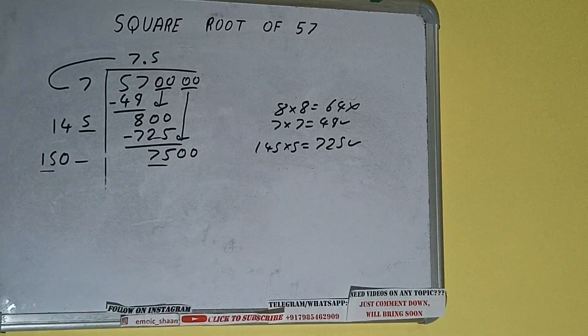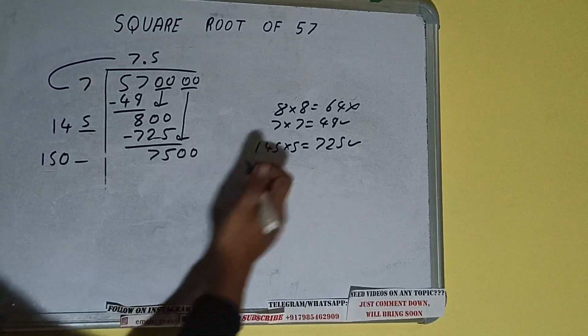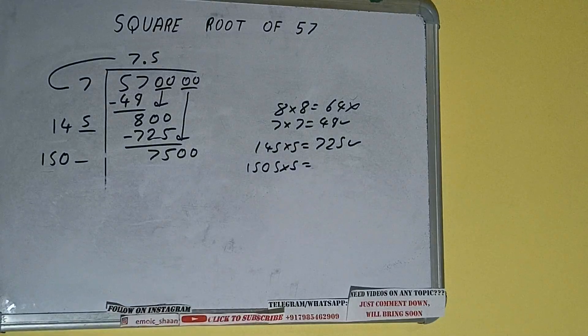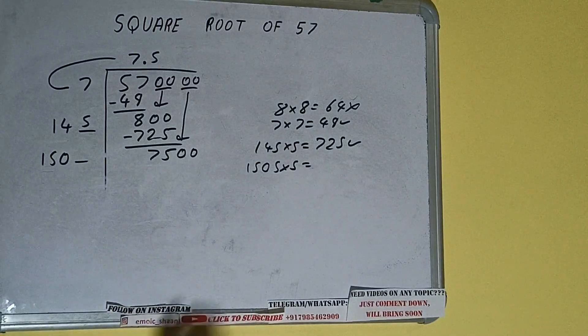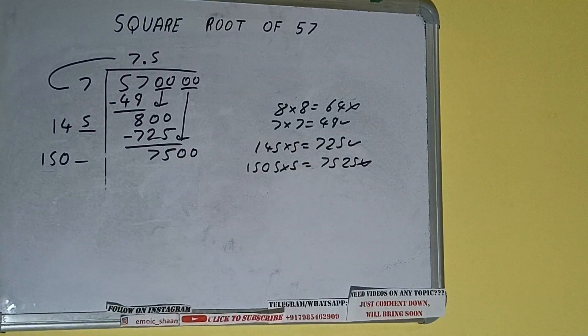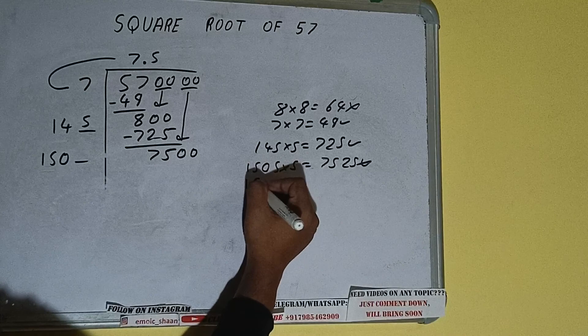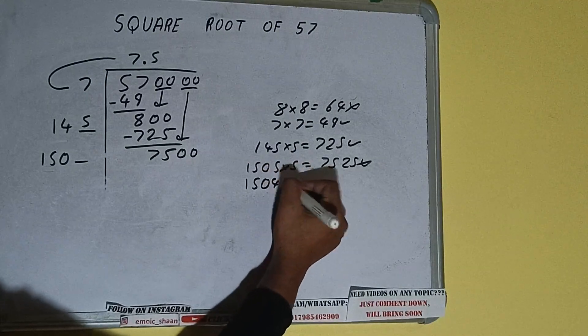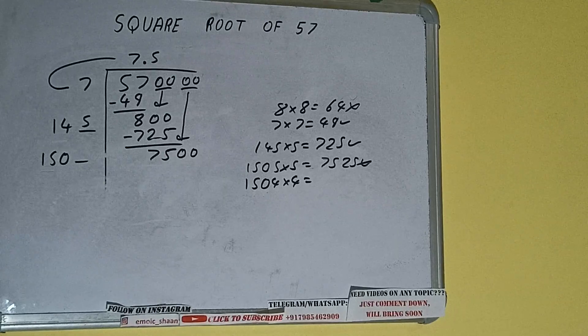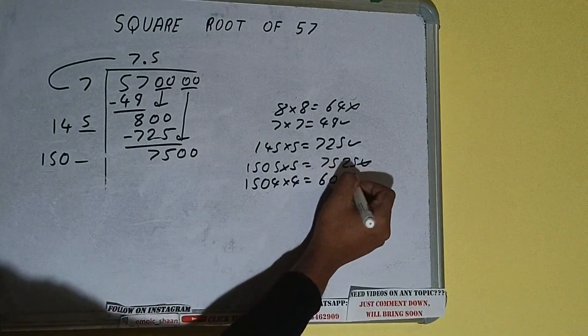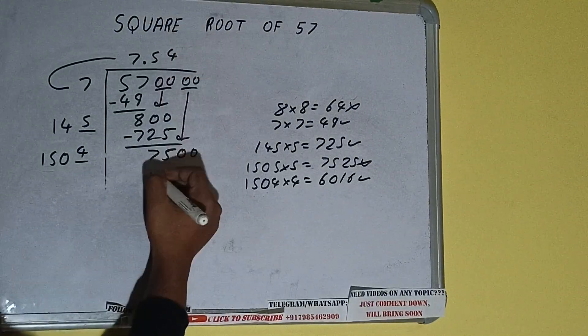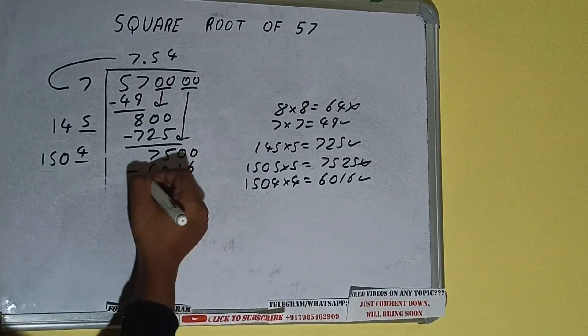15 times 5 is 75, right? So we can try 5 times: 1505 into 5 we can try, and we'll be having 7525, which is bigger than this 7500, so we cannot take it. Let's try 4 times: 1504 into 4 we can try, and we'll be having 6016, which is good to take.